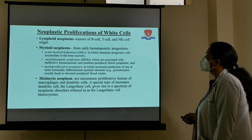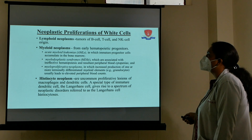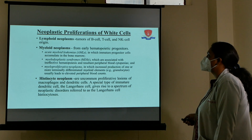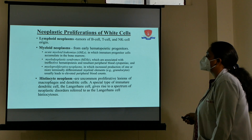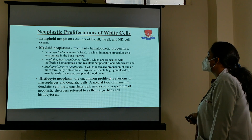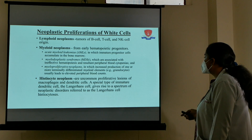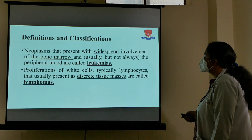These three categories of myeloid neoplasms will be covered in detail in the hematology section. Other than lymphoid and myeloid neoplasms, histiocytic neoplasms also come in the classification of white cell tumors. These are proliferative lesions of macrophages and dendritic cells.